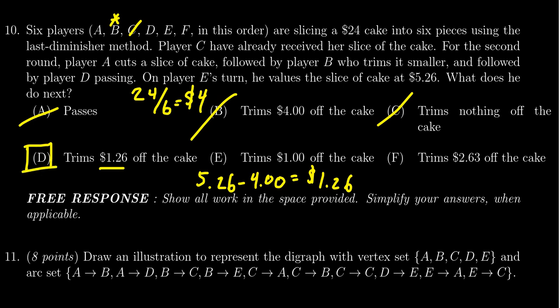So what Player E would do would be trim off a dollar 26 off the cake. And then depending on what F does, we'll decide whether Player E gets the cake or not. But regardless, what Player E should do is trim off a dollar and 26 cents.